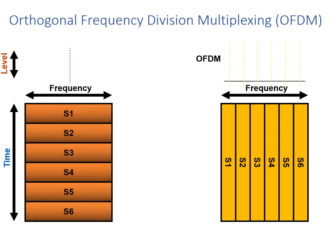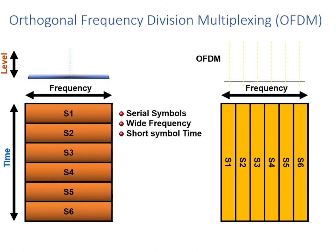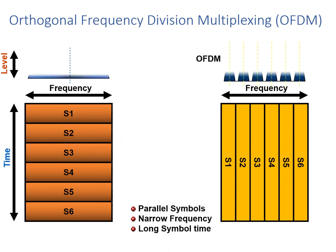Basically, in traditional systems where symbols are being transmitted — a symbol, for example, is a piece of information — a relatively broad bandwidth is used for each one of the symbols, and each one of these symbols is transmitted typically sequentially for a relatively short period of time. With OFDM, we transmit multiple symbols in parallel, each symbol using a relatively very narrow piece of spectrum or narrow bandwidth. However, each symbol is transmitted for a much greater period of time.